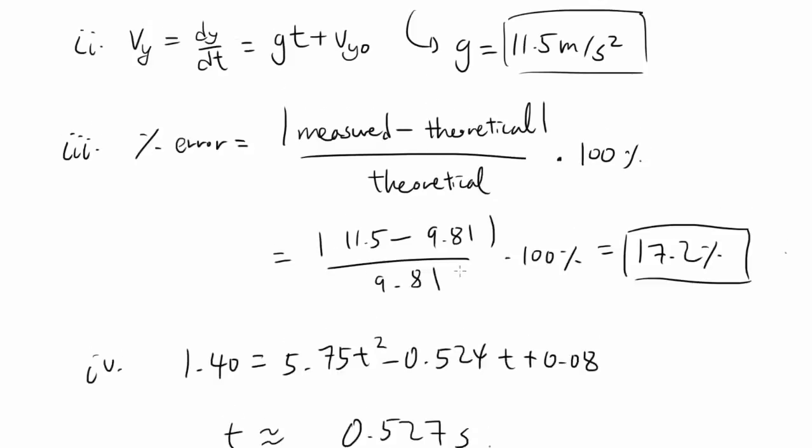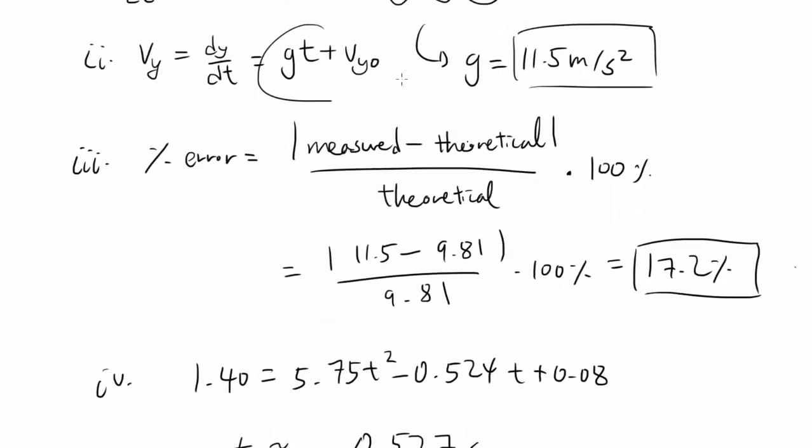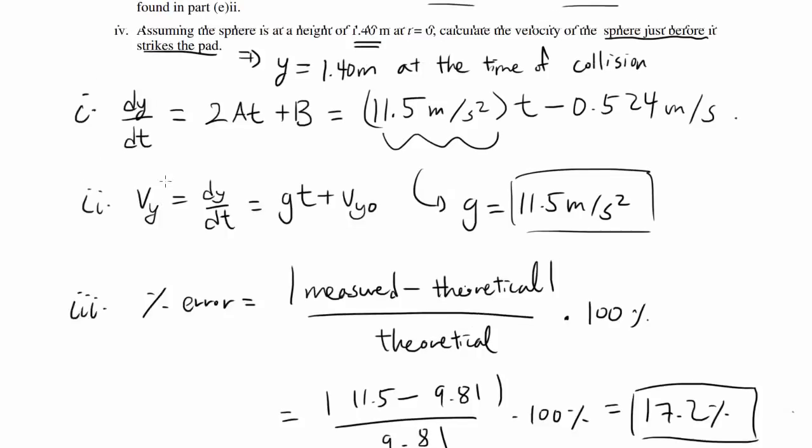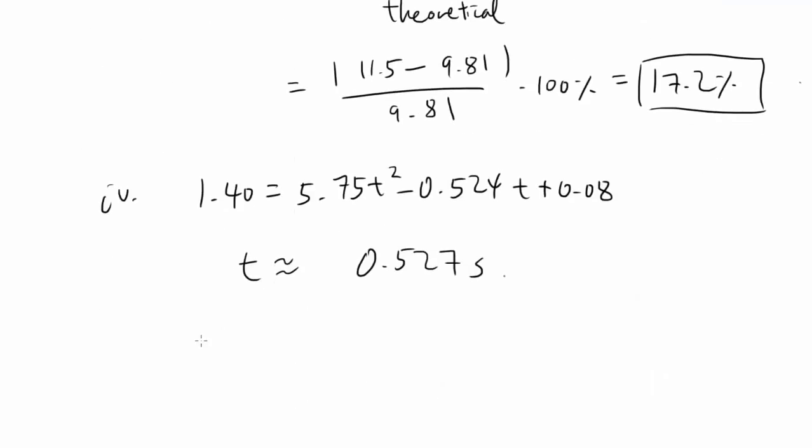Using this time, we want to find the velocity just before it strikes the pad. We have the equation for the velocity right here. So our velocity is 11.5 times the time minus 0.524. If you calculate this, you should get 5.54 meters per second.